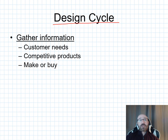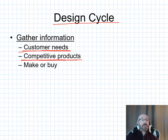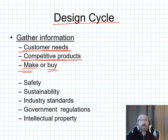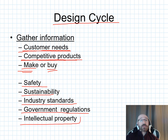In gathering information for the design cycle, a lot will come from talking with the customer — what are their needs, wants, and desired outputs? You're gathering information on the competitive market: what already exists, what prices are charged, and how available it is. Also consider what parts you'll need to make yourself versus existing off-the-shelf parts, safety requirements, sustainability, related industrial standards, government regulations, and any intellectual property considerations.